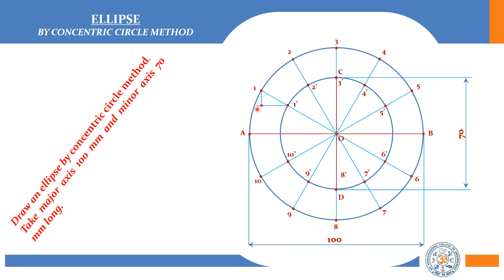At point 1, draw one horizontal line and one vertical line to get intersection point P1. Similarly at point 2, draw a horizontal and vertical line to get P2. So between points A and C I have obtained P1 and P2. Joining these gives the quarter ellipse — the quarter elliptical curve.